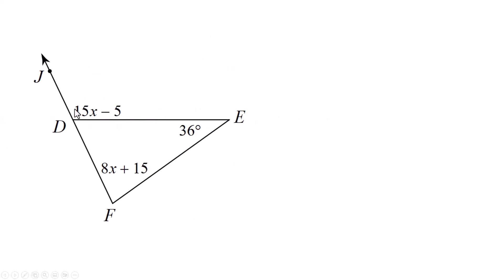The diagram looks a little different. The exterior angle is right now up here where the 15x minus 5, that's your exterior angle. These are the two that we're going to add together and set equal to that. So let's do that. 8x plus 15 plus 36 equals the exterior angle 15x minus 5.